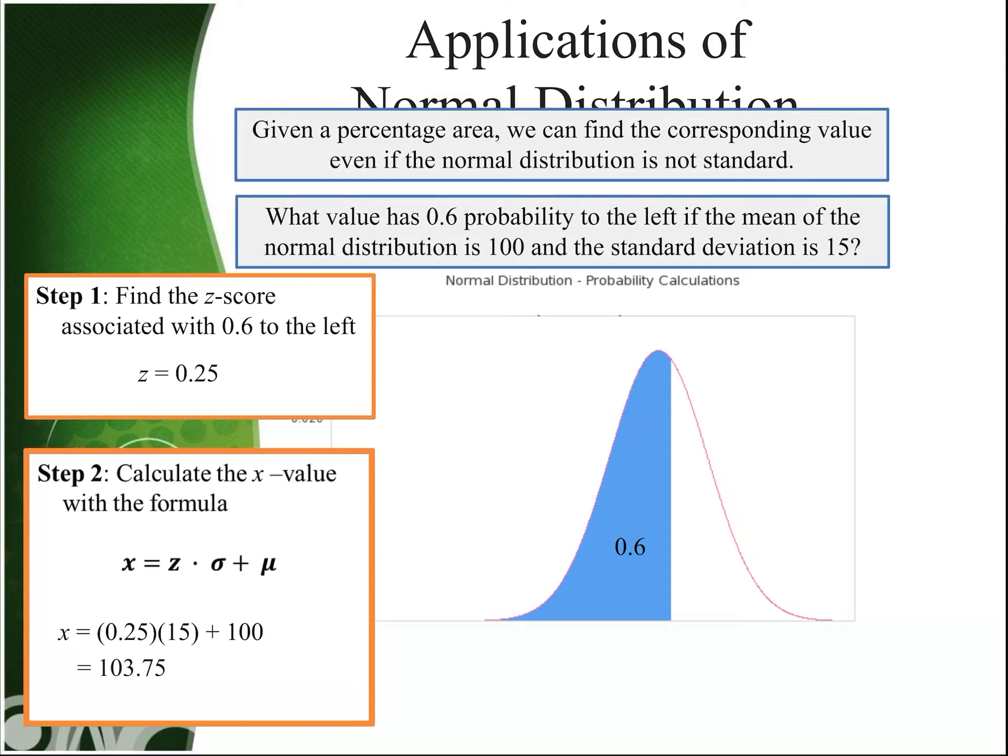And the x value we get is 103.75, which makes sense. Remember, 0.6 probability, 60%, is a little bit bigger than half. And if the mean is 100, that'd be right in the middle, then we would expect something just a little bit bigger than 100 for this corresponding x value. And we got 103.75.